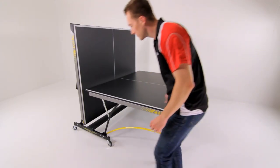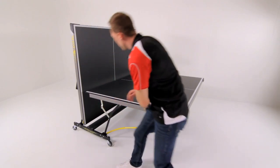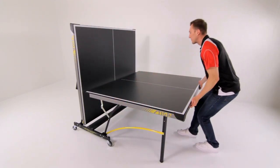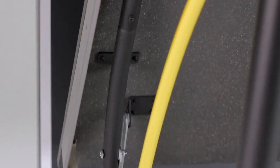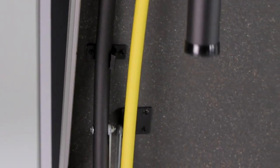Then vertically fold both halves of the table to reach the storage position. The Stiga Synergy self-opening legs automatically deploy when opening or closing the table halves for added safety and convenience.